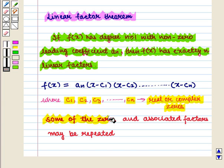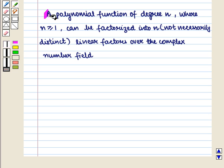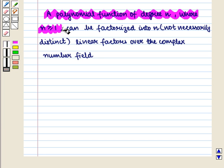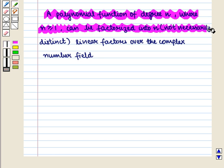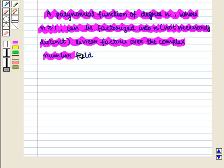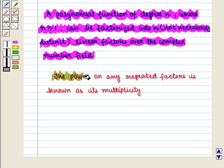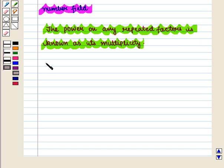Some of the zeros and associated factors may be repeated. In other words, a polynomial function of degree n, where n ≥ 1, can be factorized into n not necessarily distinct linear factors over the complex number field. The power on any repeated factor is known as its multiplicity.